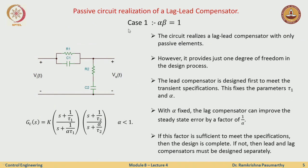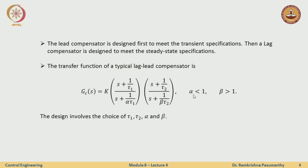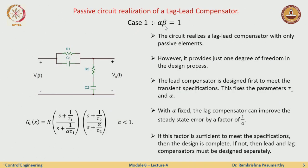Looking at how to realize a lead-lag compensator: in case one, where alpha is less than 1 and beta greater than 1, we can choose a combination such that alpha times beta equals 1. This circuit realizes a lead-lag compensator with just passive elements. However, there is less freedom — once you choose alpha, beta is fixed, and vice versa.